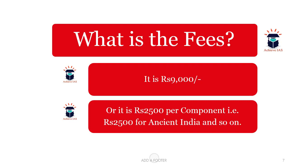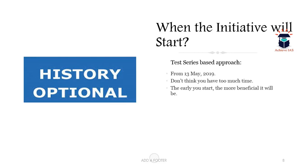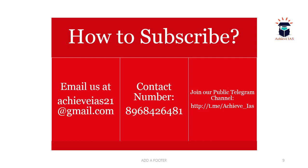There is a fee structure for this initiative: ₹9,000 as a one-time payment for the entire program. If that seems costly, you can subscribe on a per-component basis. History optional has four components — Ancient India, Medieval India, Modern India, and World History — each priced at ₹2,500. The timetable has started from May 13, 2019, so the earlier you start, the more beneficial it will be.